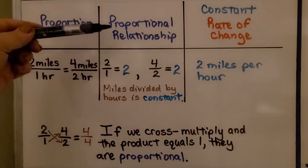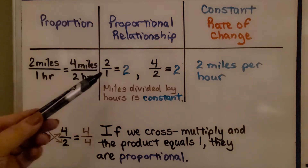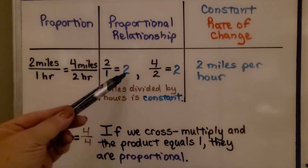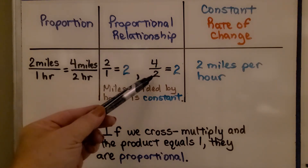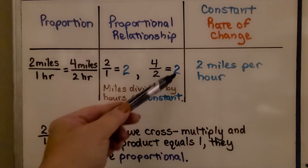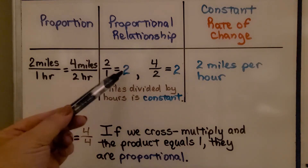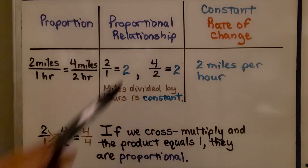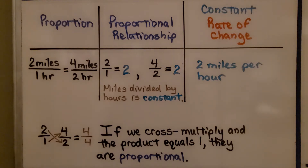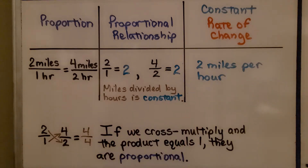A proportional relationship: if we do two divided by one, we get two. And if we do four divided by two, we also get two. The miles divided by the hours is constant — they're both two. The constant rate of change is two miles per hour.